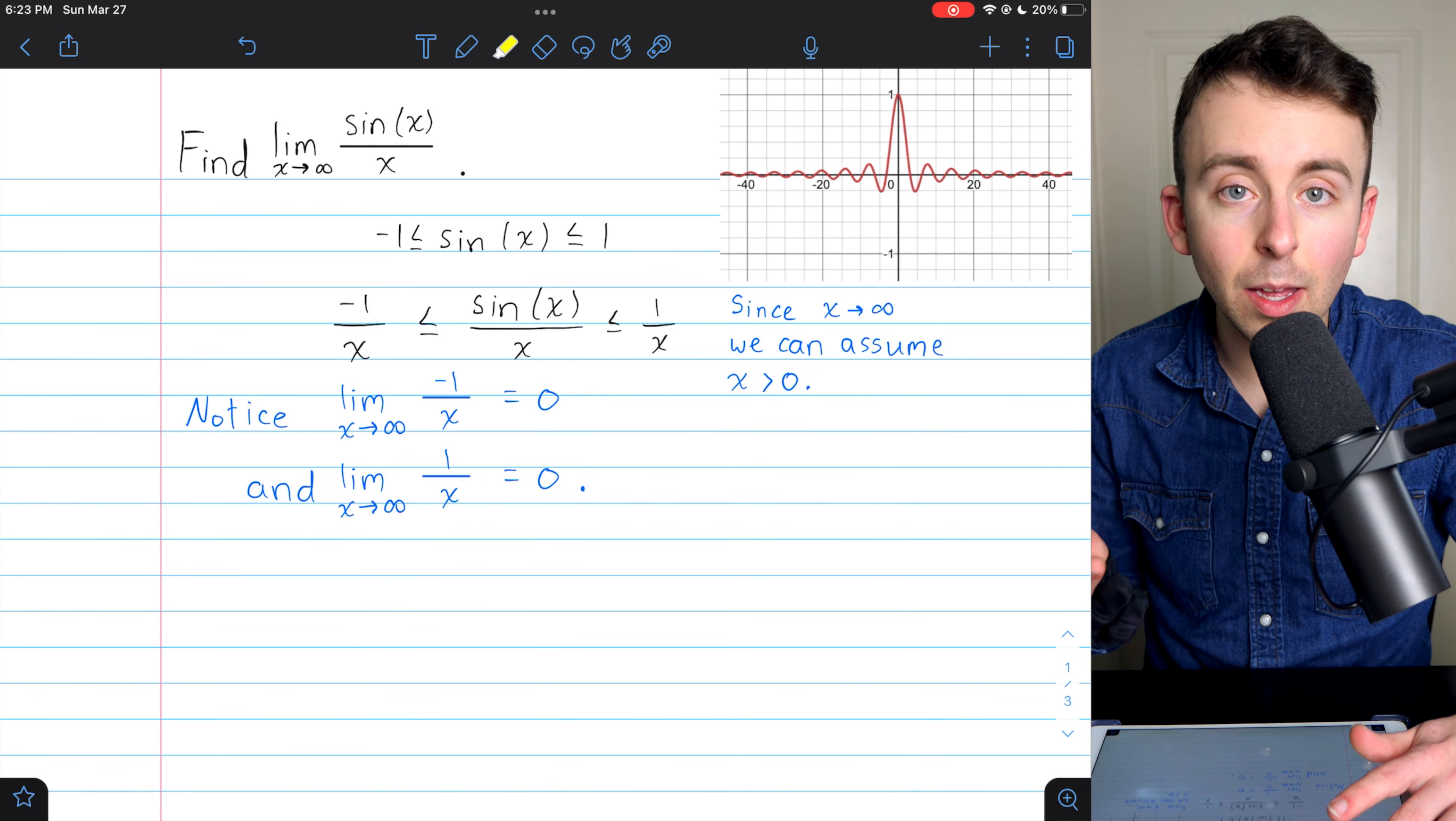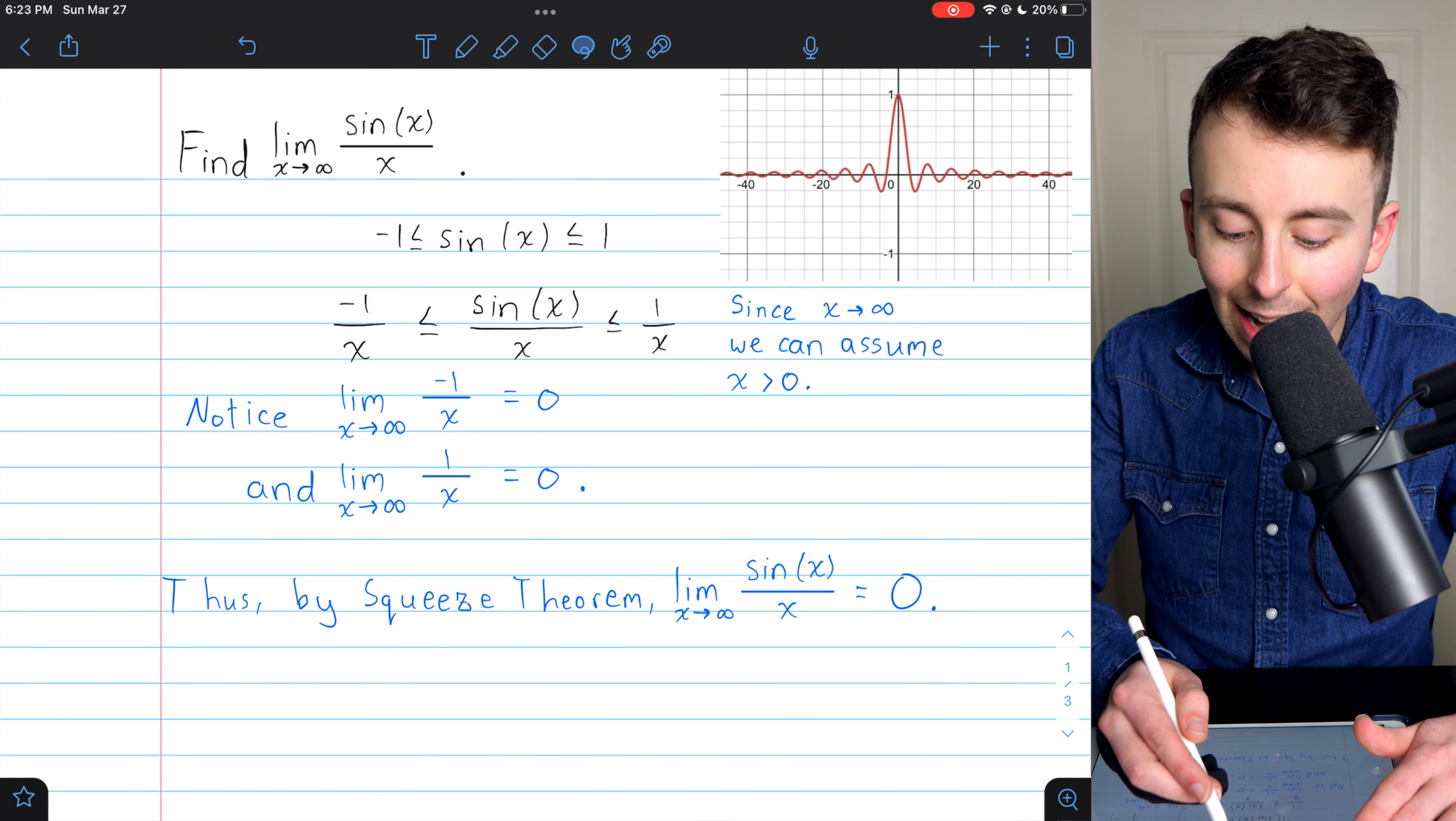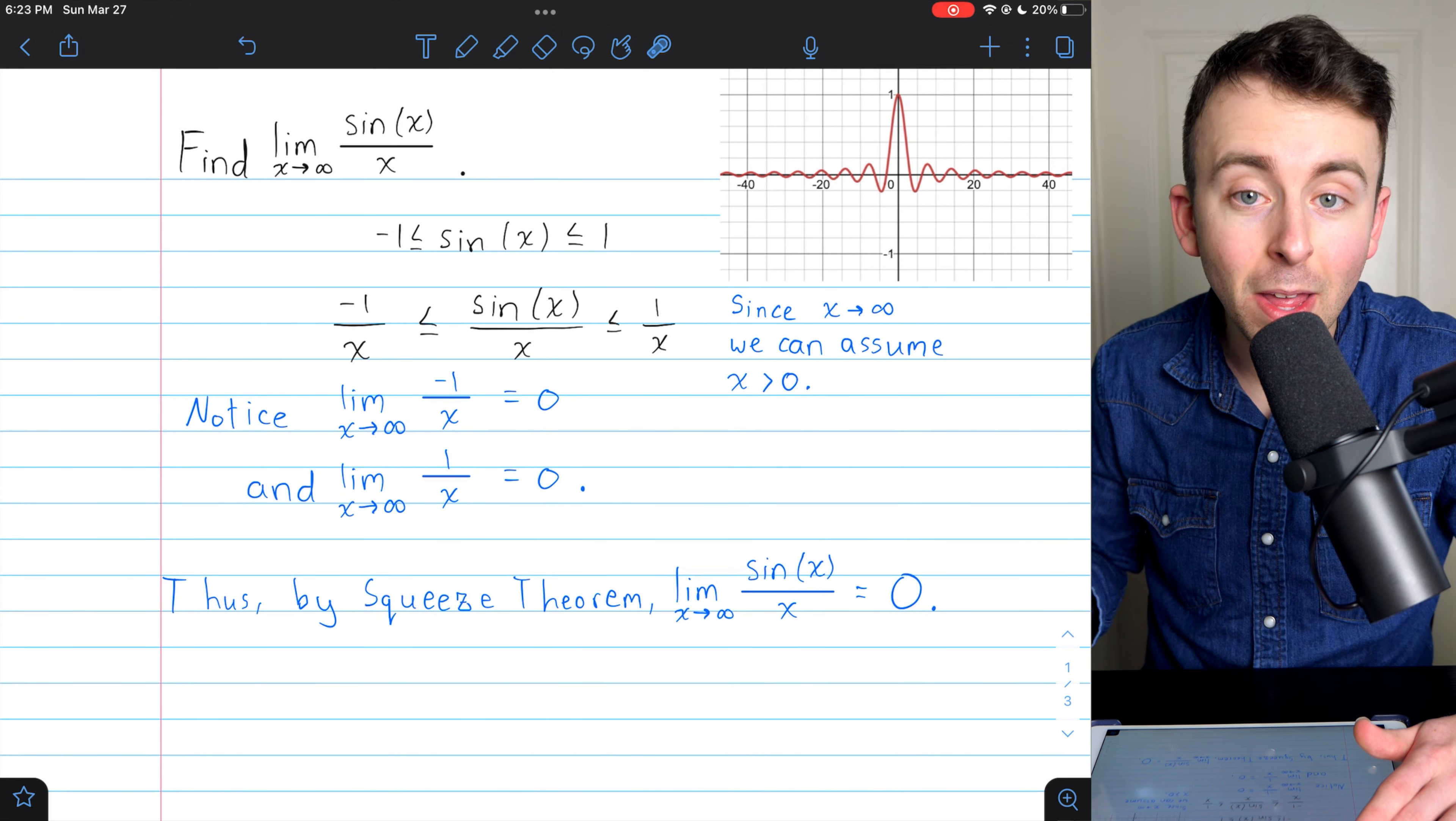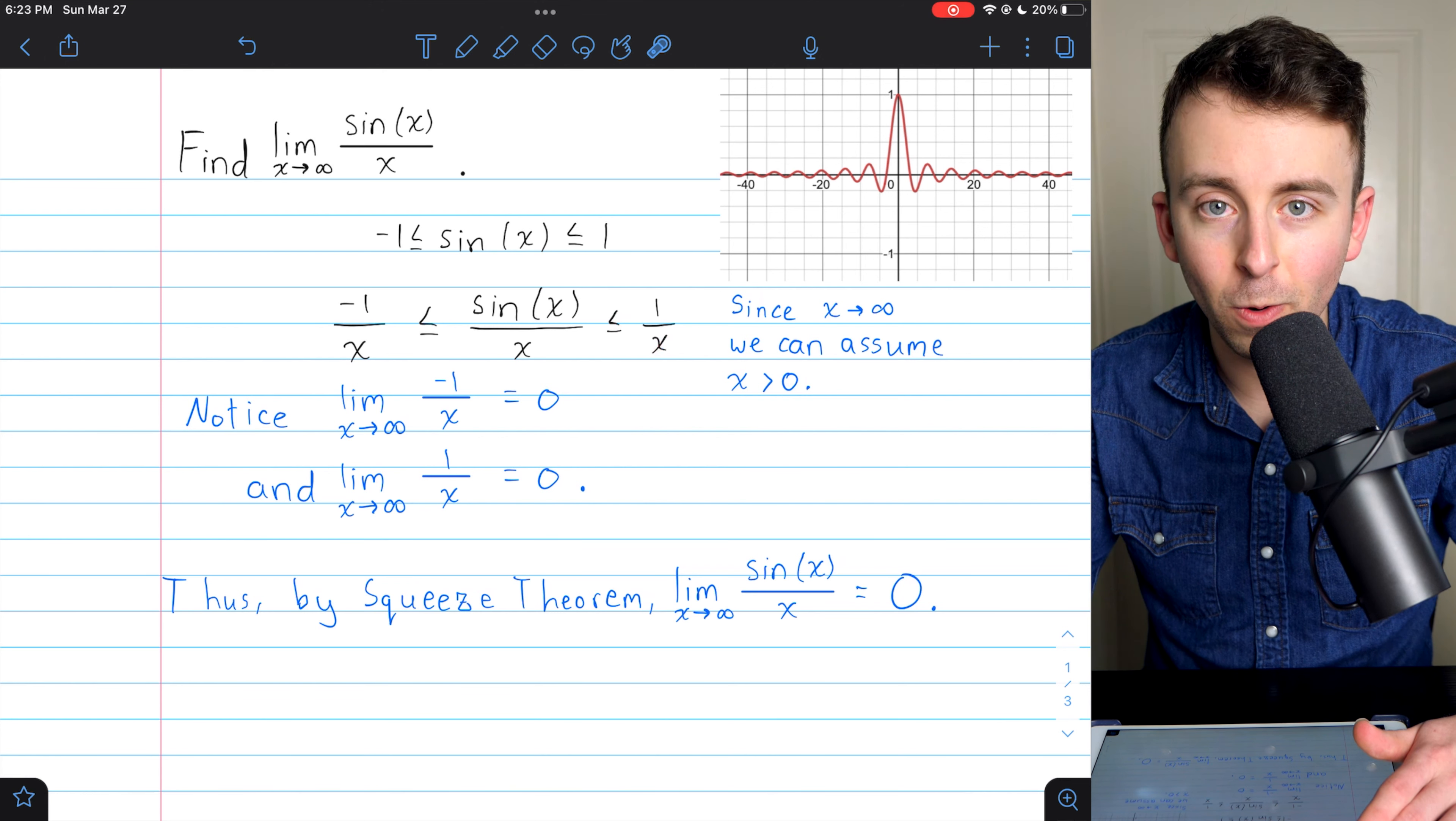So since the limits of the left and the right functions are the same, they're both 0, we can use the squeeze theorem to conclude that our function, which is squeezed in between negative 1 over x and 1 over x, our function, sine of x over x, by the squeeze theorem, must have a limit of 0 as x goes to infinity, since it's squeezed between two functions that also approach 0.